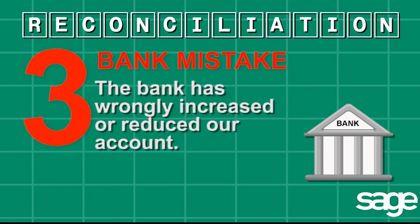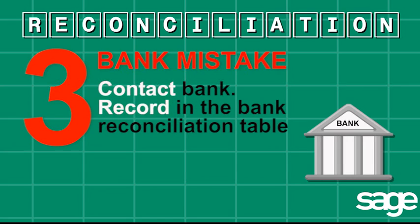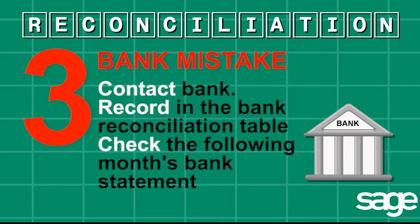Our third reason for discrepancies is errors. It could happen that the bank has made a mistake in the bank statement by having wrongly increased or reduced our account. Such a mistake will only be corrected in the following month's bank statement. That is why, after contacting the bank and requesting an amended statement, an entry is made in the bank reconciliation statement to remind us to check next month whether the bank has, in fact, made the correction. In the following month, you would check that the error has been corrected before you begin the next bank reconciliation.